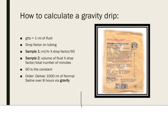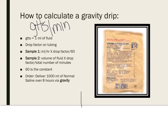Next, let's say that we're going to have a gravity drip — we're going to infuse the fluids via gravity, not using a pump. When we infuse a gravity drip, the correct terminology is drops per minute. You need additional information. So if the physician orders 1,000 mLs of normal saline over 8 hours via gravity, we have to know what the drop factor is on the tubing. We find the drop factor on the packaging — in this instance, the drop factor is 10.